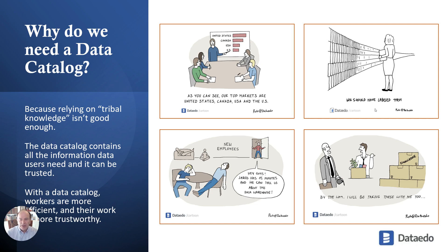The second example is a worker searching for an understanding of the data so they can do their job. It's been estimated that the average worker wastes between 30 and 35 percent of their time searching for this understanding, often across many different sources. They can't find the information and so they ask other people — they go to an expert and ask the question. The expert then also has to spend time answering it, potentially searching for the answer themselves and conveying it back. So there's a lot of wasted time.